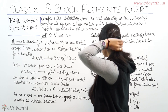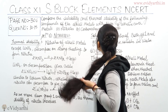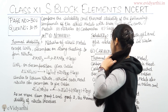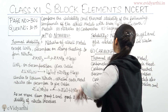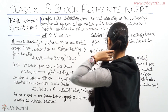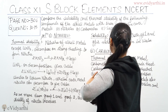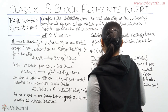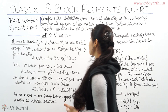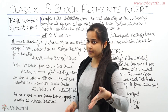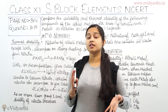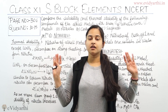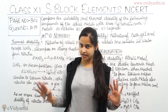Have a look at the question: Compare the solubility and thermal stability of the following compounds of the alkali metals with those of the alkaline earth metals. First is nitrates, second is carbonates, and third is sulphates.